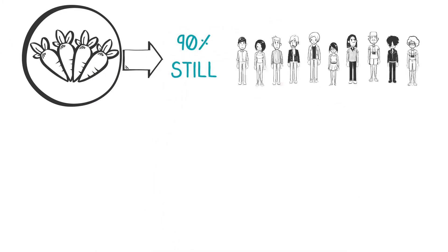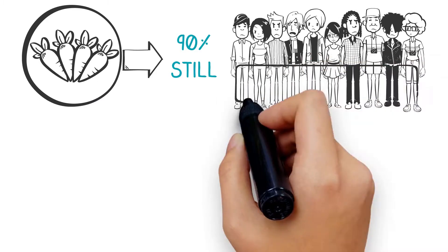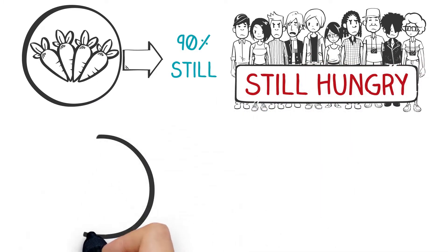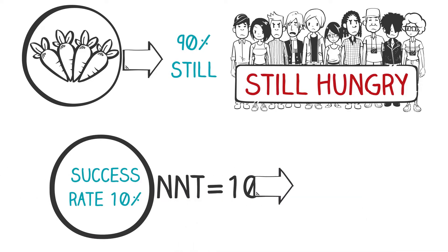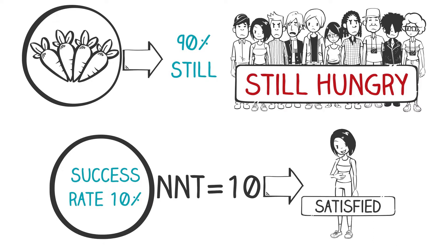And let's say that you just had some carrot sticks. In this case, 90% of the people are probably still going to be hungry after lunch. Success rate? 10%. NNT equals 10. You have to feed 10 people carrot sticks in order to achieve your goal of having at least one person say they aren't hungry anymore.